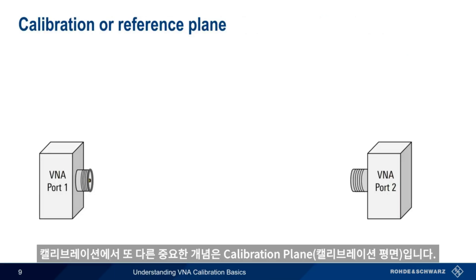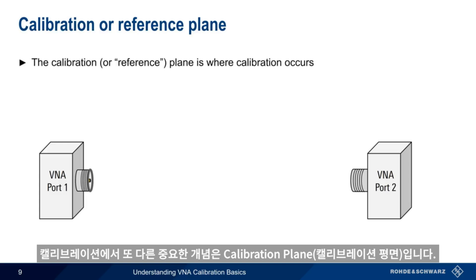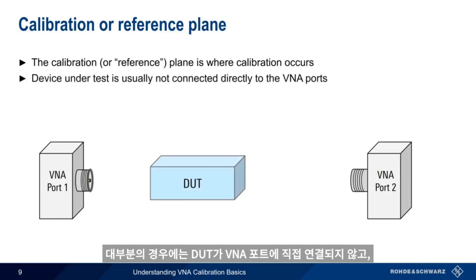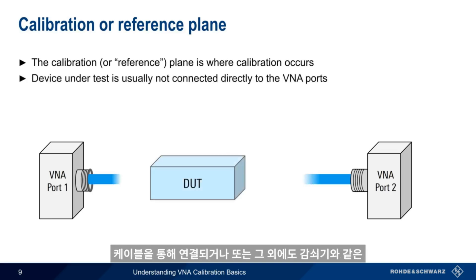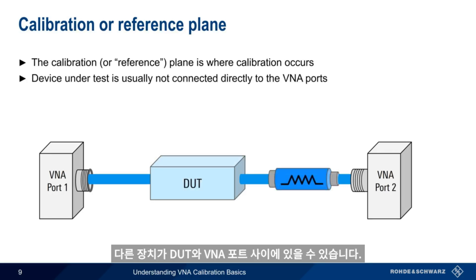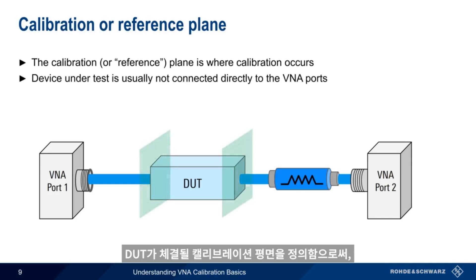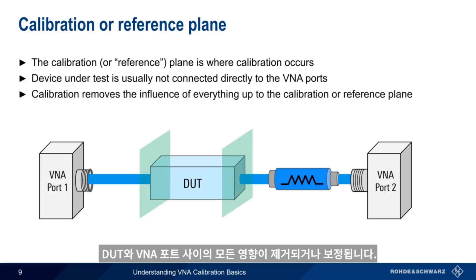Another important concept in calibration is a calibration plane or reference plane, which is where calibration occurs. In most cases, the device under test is not directly connected to the VNA ports. In addition to cables, other devices such as attenuators may be between the DUT ports and the VNA ports. By defining our calibration or reference planes where the DUT will be attached, the influence of everything between the DUT and the analyzer ports will be removed or calibrated out.